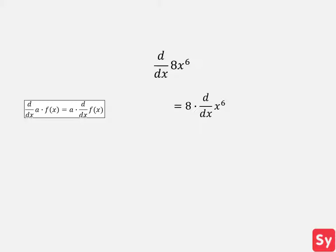Next, we use the power rule to finish computing this derivative. This equals 8 times 6 times x to the 6th minus 1, and this simplifies to 48 times x to the 5th, our answer.